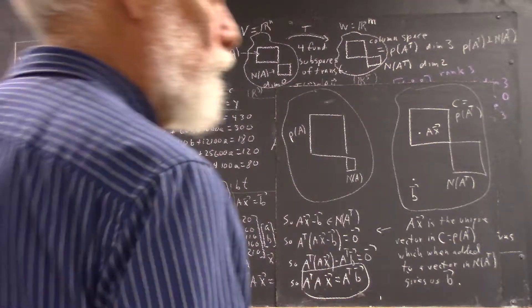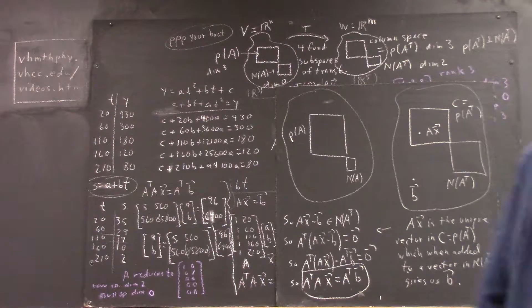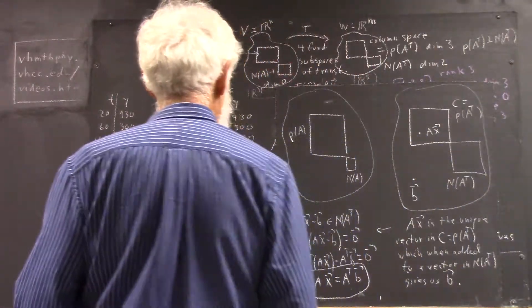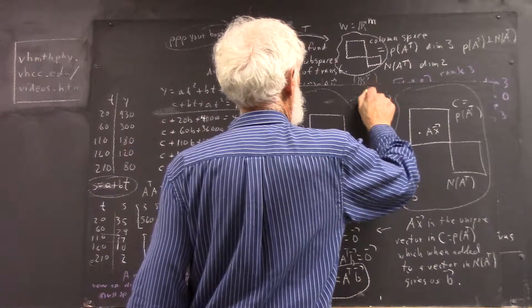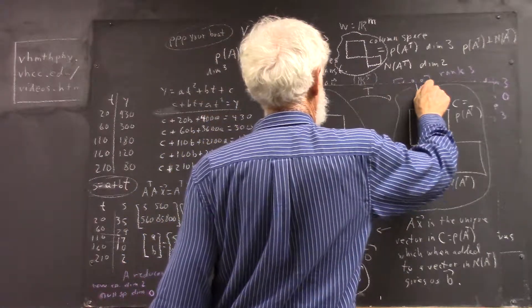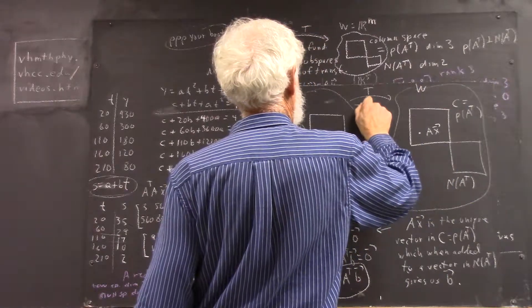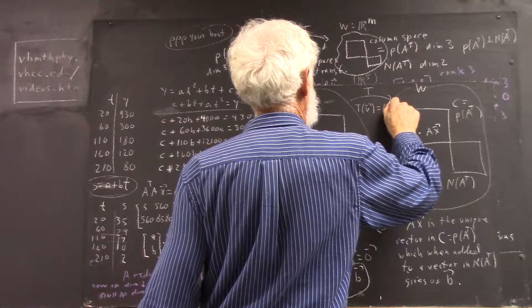A little bit of terminology. Here's my chalk. In general, you've got a transformation T from some space V to some space W with T of V equal A times V.